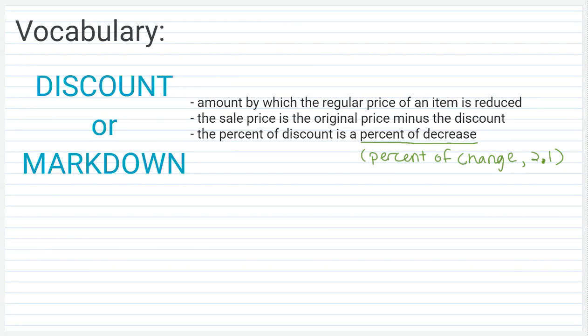The sale price is going to be the original price minus the discount. And if we're asked to find the percent of discount, this is a percent of decrease, which we talked about in a previous video on percent of change. So check that out if you need a reminder on how percent of change works, but percent of decrease is going to be the same exact formula that we used for that lesson.